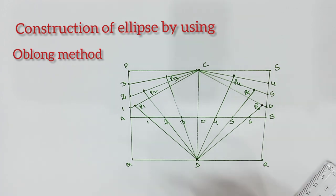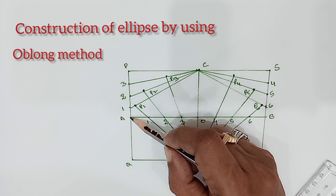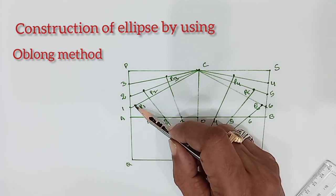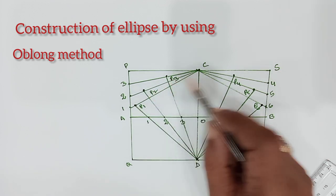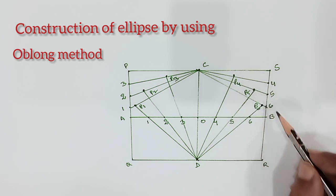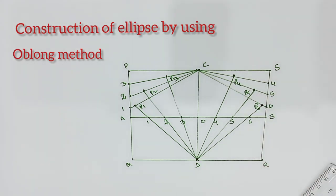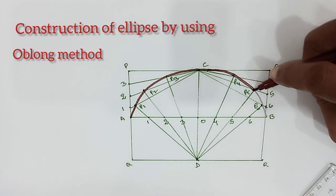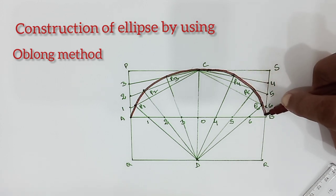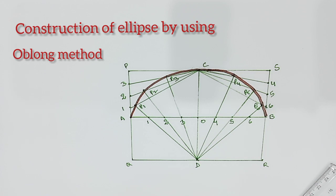Draw a smooth curve passing through all these points starting from A, P1, P2, P3, C, P4, P5, P6, and B. With that we will complete half of the ellipse. The remaining half can be completed by drawing mirror images or using the same method.